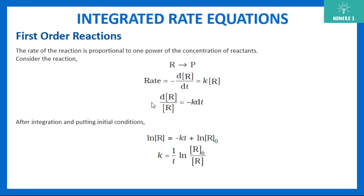This is a differential equation with variables already separated, so integrate both sides from R naught to R, and time from 0 to t. Integration of 1/R dR gives ln R. Putting in the limits gives the final expression. This derivation is an exam question, and you can also extract k from this expression.